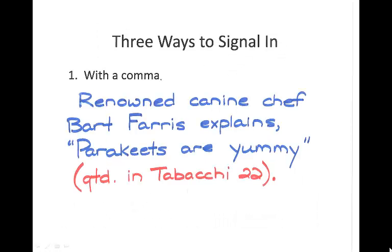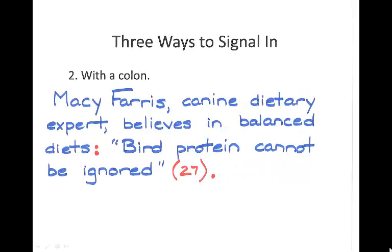There are three ways to signal into a quote. The first and most common is the comma. Notice how the comma follows the word that sets up the quote and comes before the quotation mark. Also note that the period does not go inside the quotation marks — it comes after the documentation. Similarly, the quotation mark itself comes before the parenthetical citation. You can also signal in with a colon — that double dot. The big rule about a colon is that what precedes it has to be a complete sentence. Note again that the quotation begins after the colon, ends before the parenthetical citation, and the period comes after that documentation.